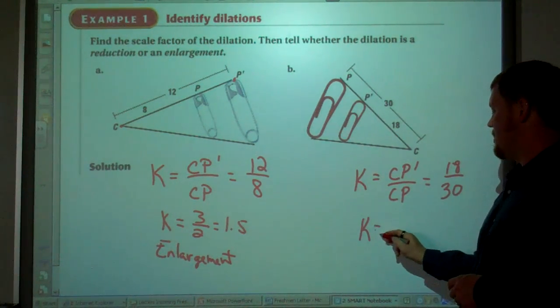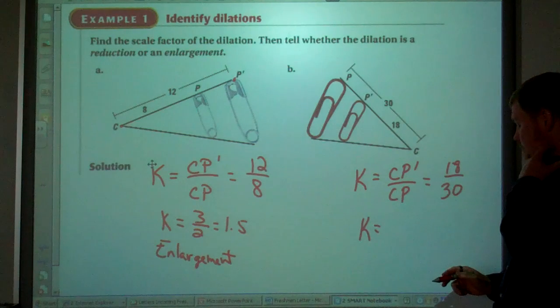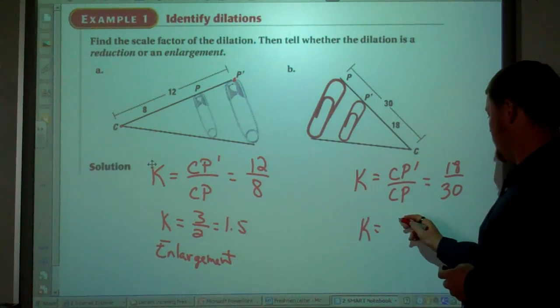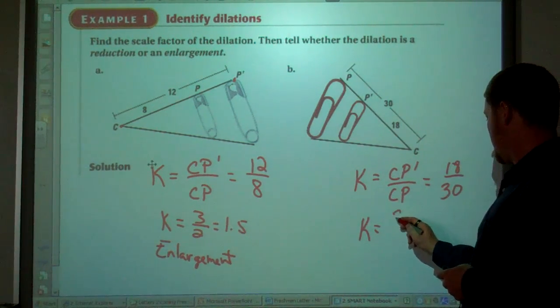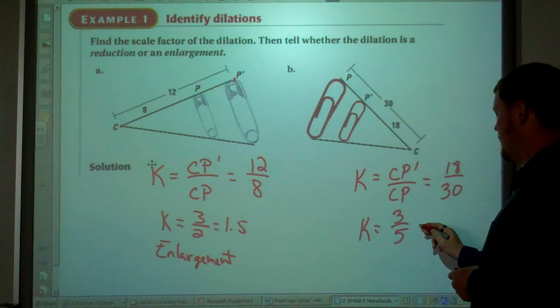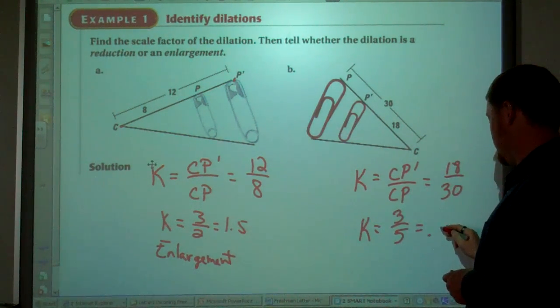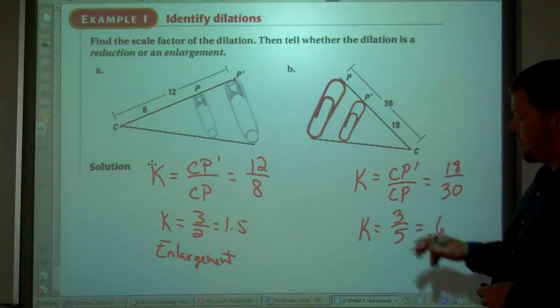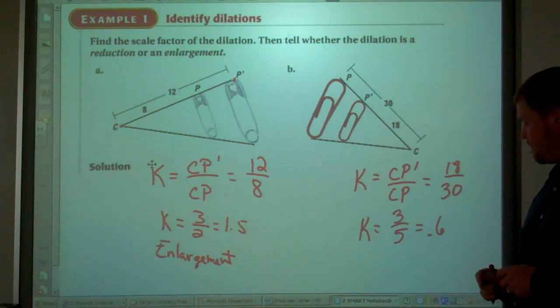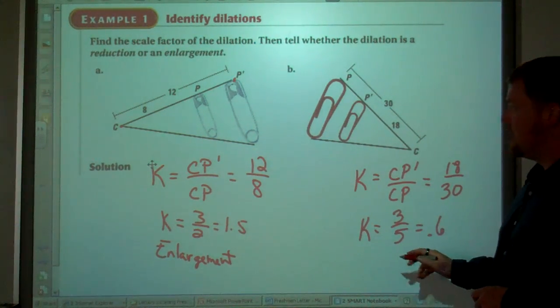So K equals, we get 3 fifths, which is 0.6. So K is between 0 and 1. That is a reduction.